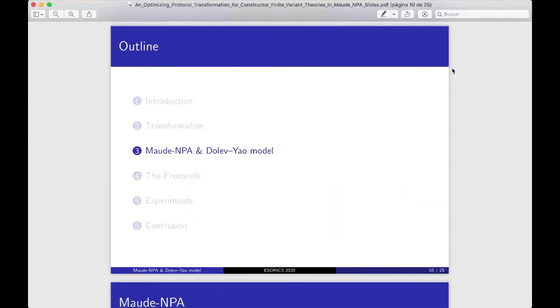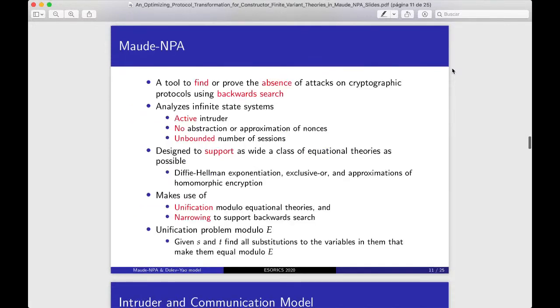Point 3 is to speak the Maude-NPA tool and Dolev-Yao model. Maude-NPA is a tool to find or prove the absence of attacks on cryptographic protocols using backward search. It has the ability to analyze infinite state systems. Maude-NPA uses an active intruder, no abstraction or approximation of nonces, and unbounded number of sessions. Maude-NPA is designed to support as wide a class of equational theories as possible, like Diffie-Hellman exponentiation, the exclusive or, an approximation of homomorphic encryption, and now bilinear pairing. Maude-NPA makes use of unification modulo-equational theories and narrowing to support backward search.